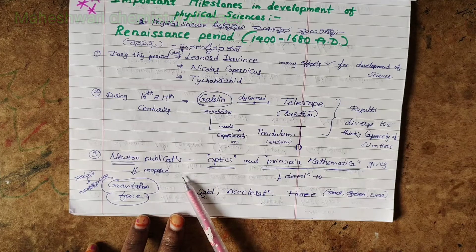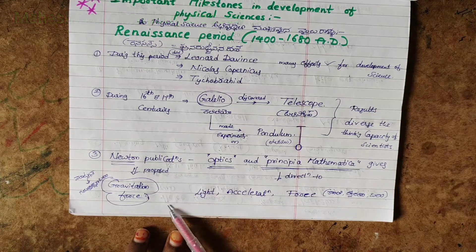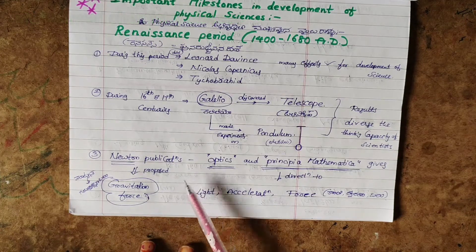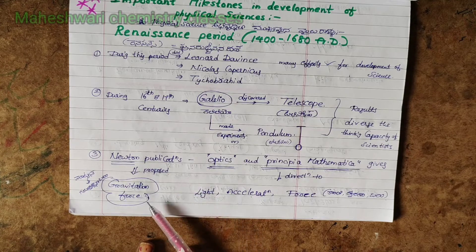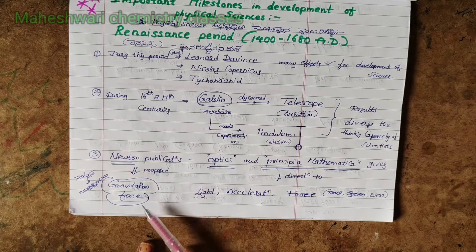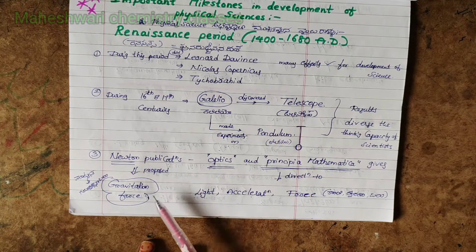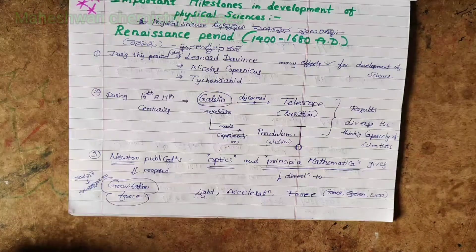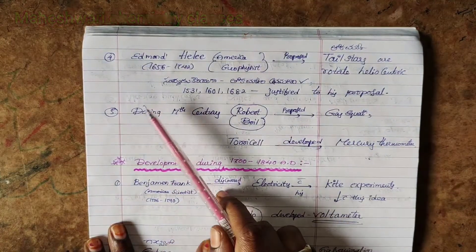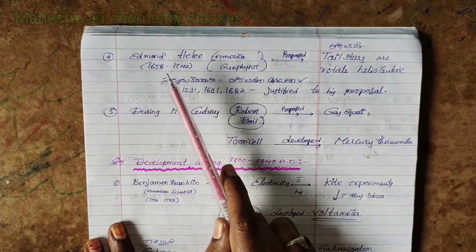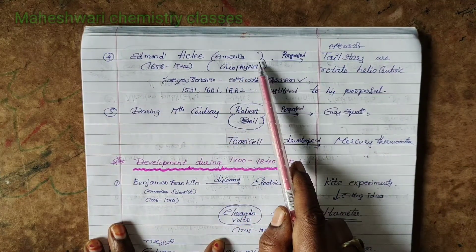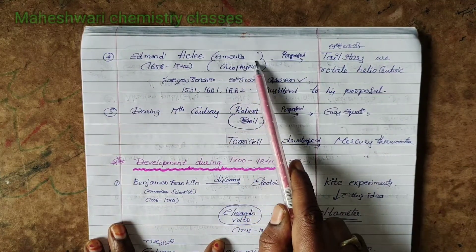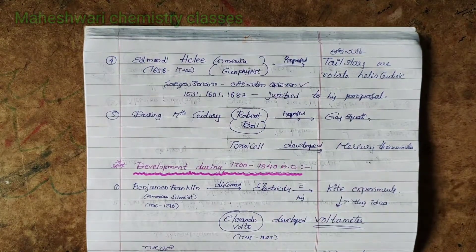Newton proposed gravitation force. Next, fourth point: Edmund Halley is a geophysicist who proposed that cometary stars rotate in a heliocentric manner.